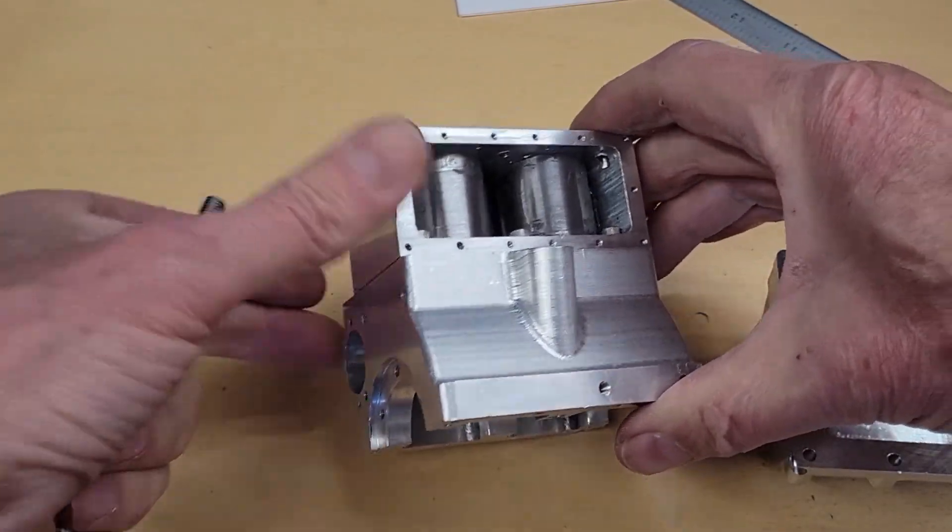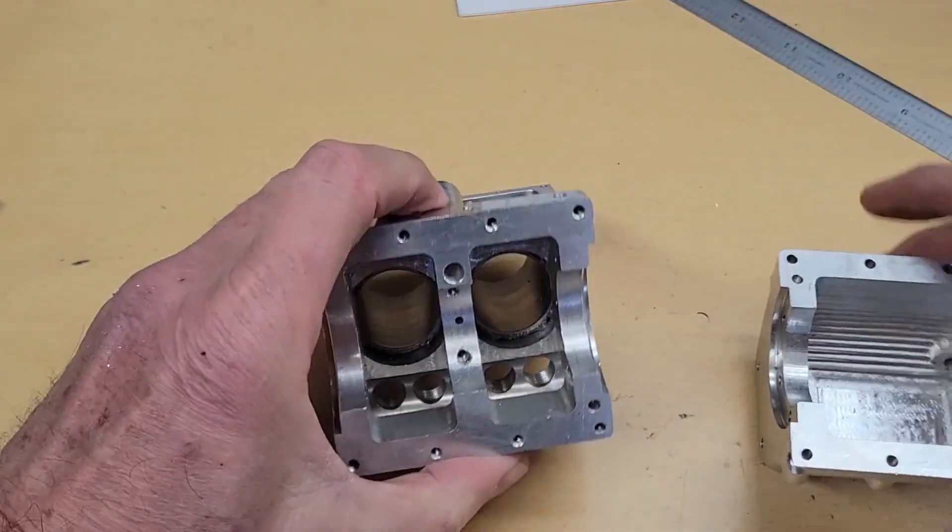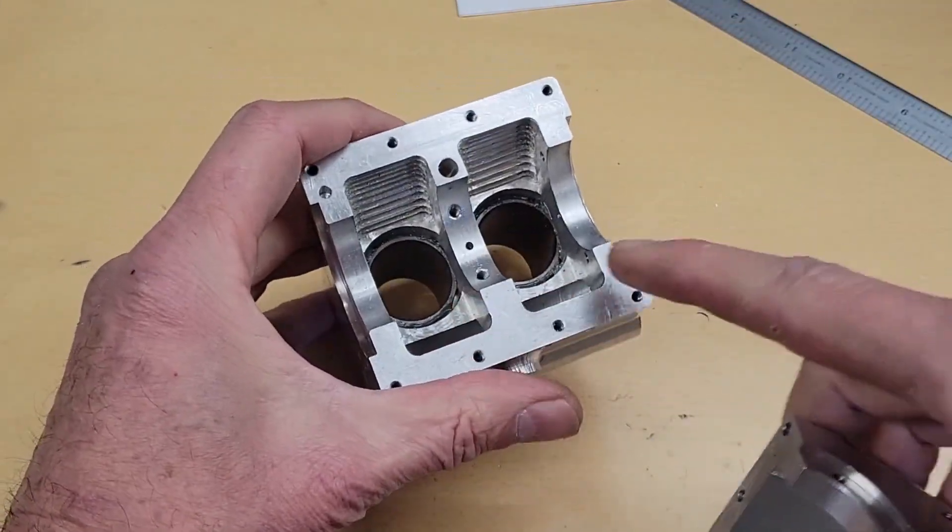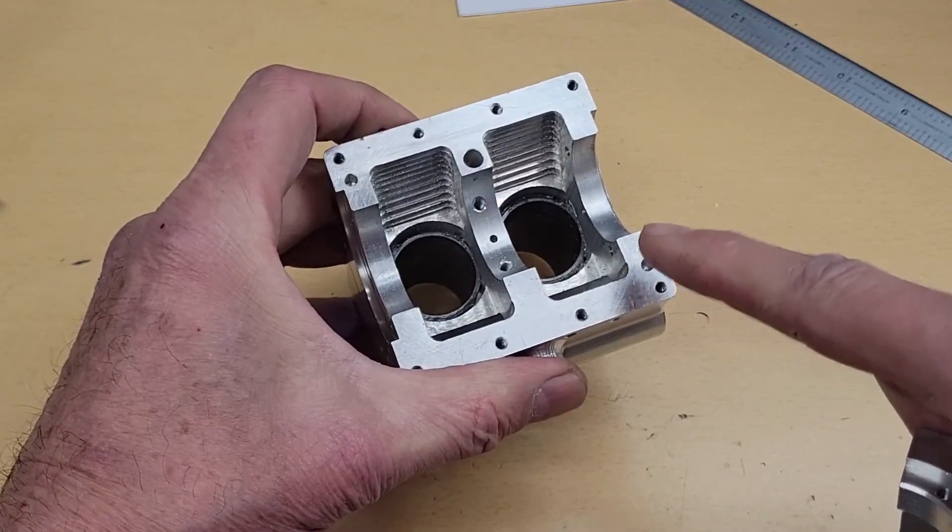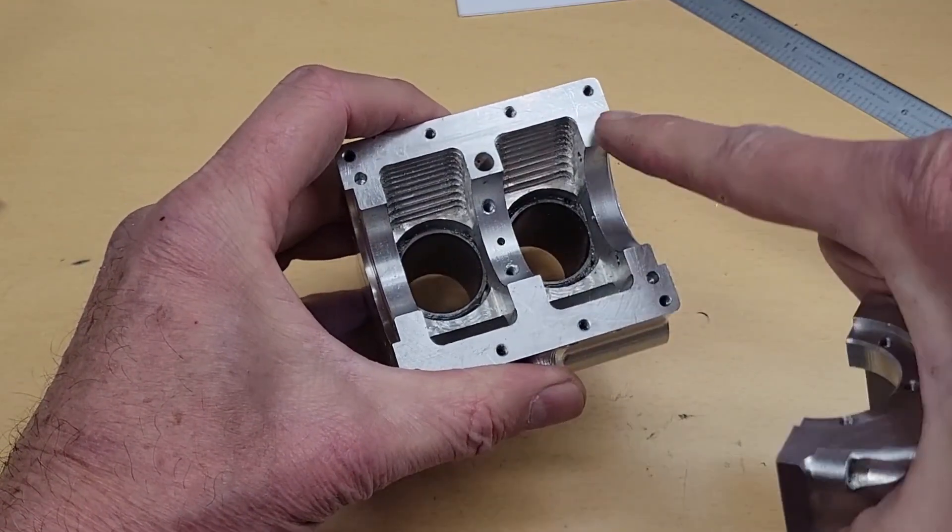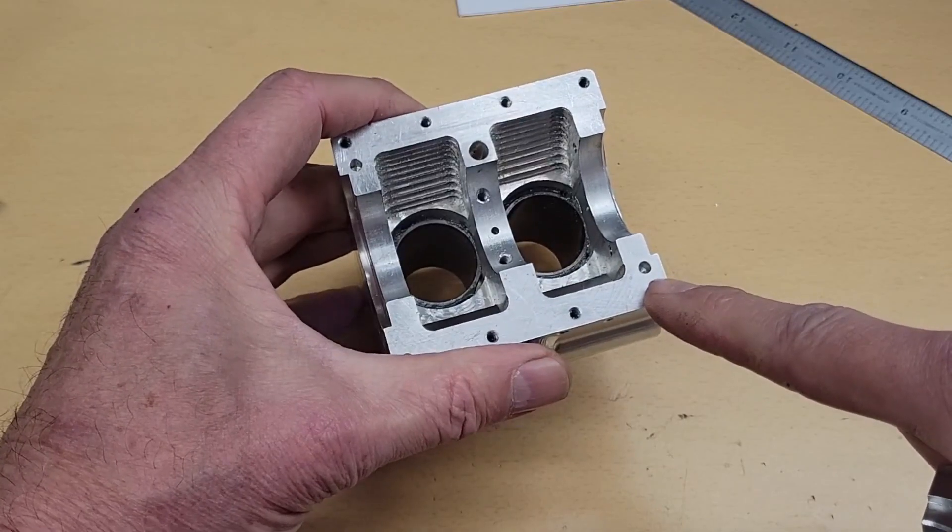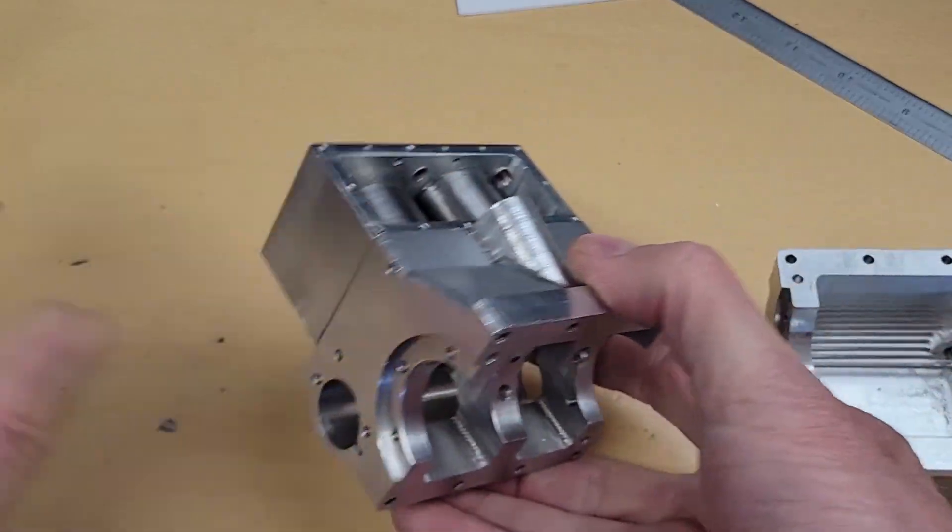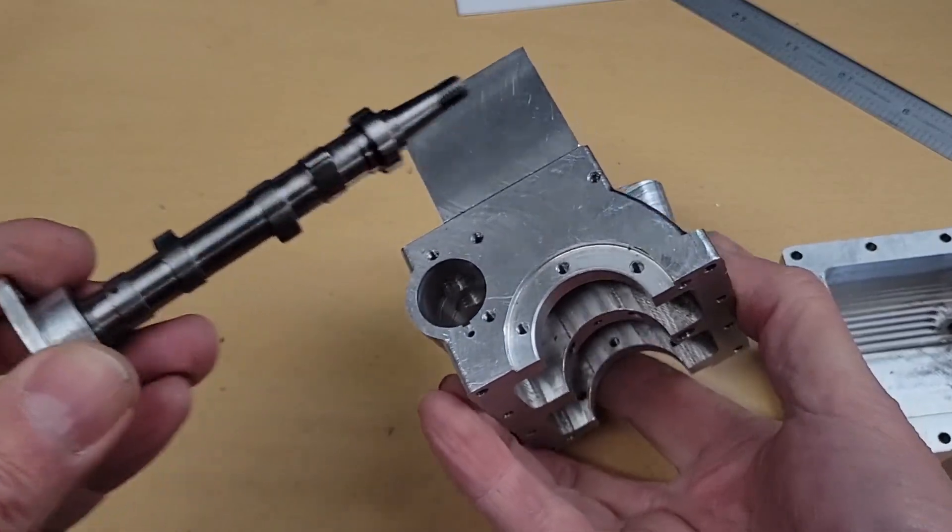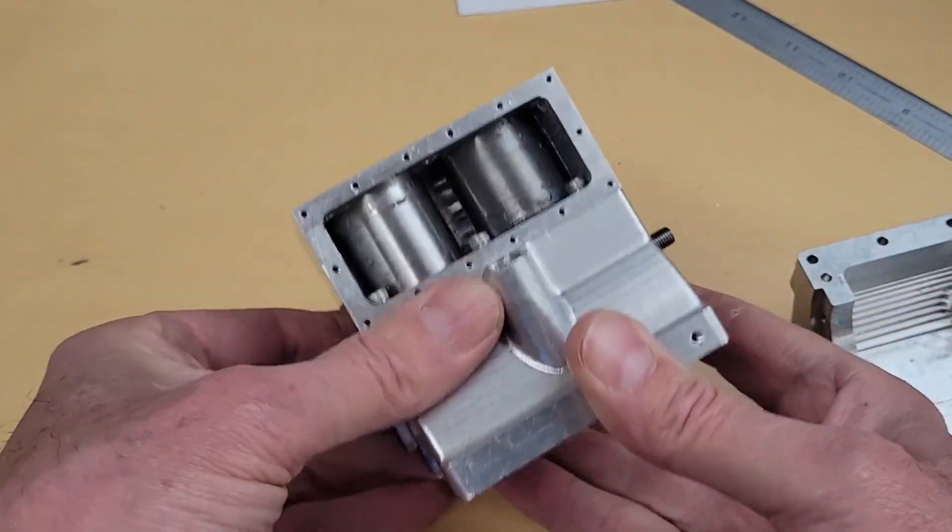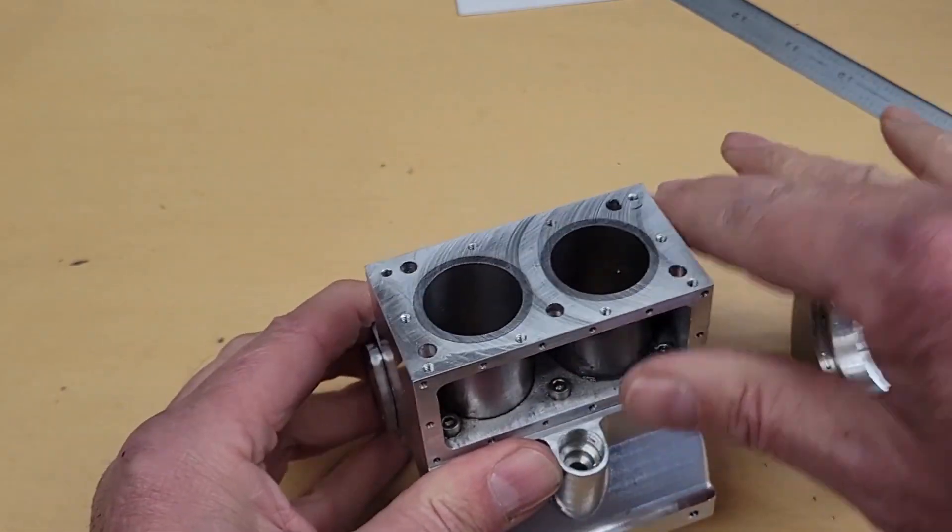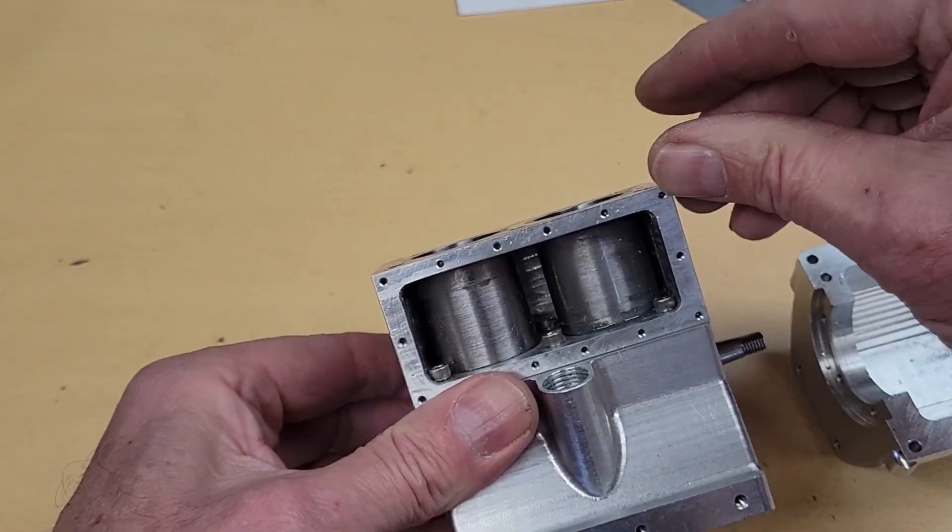To finish the short block assembly, I need the sump to crankcase gaskets. This one here and here, of course. They're identical and I need two of those, one for each side. And I also need the rear camshaft bearing holder to crankcase gasket in here. Don't need the head gasket yet. I need to finish the head assembly first.